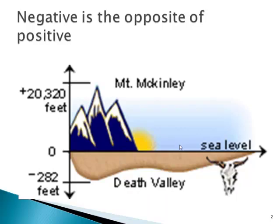Negative is the opposite of positive. Sea level is what we call zero elevation. Positive elevation is above sea level. Negative numbers tell us how far below sea level we are. Mount McKinley is a little more than 20,000 feet above sea level.